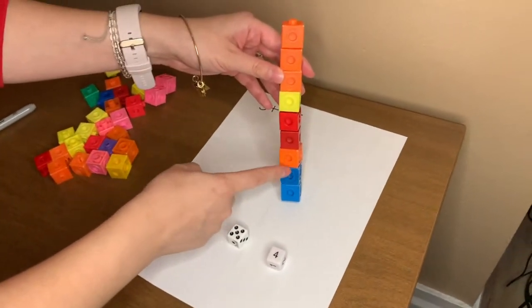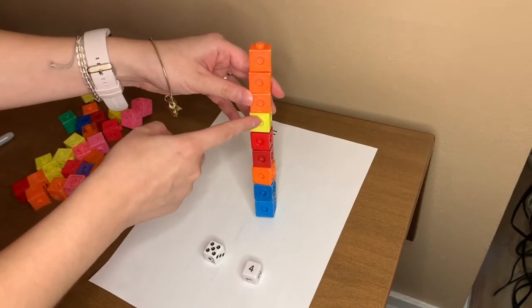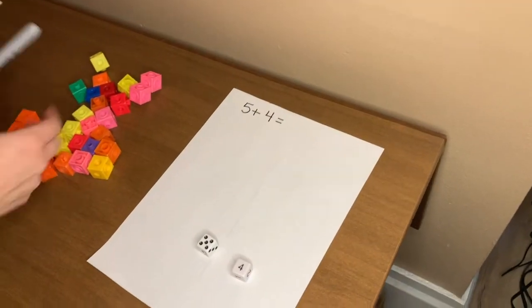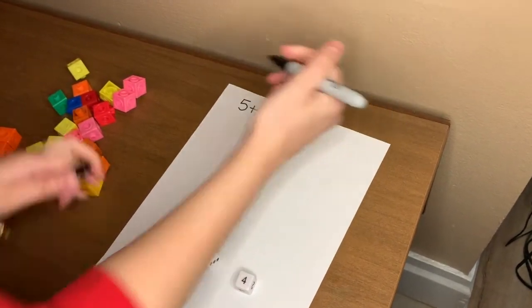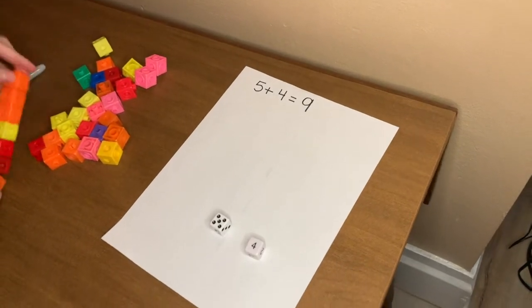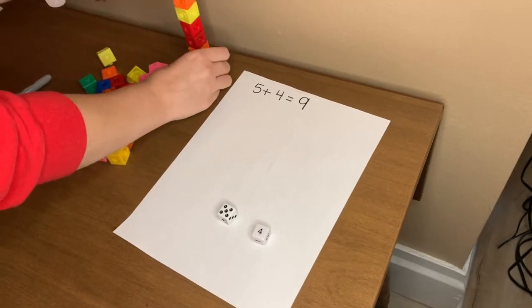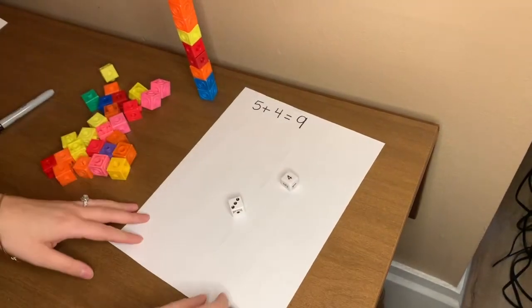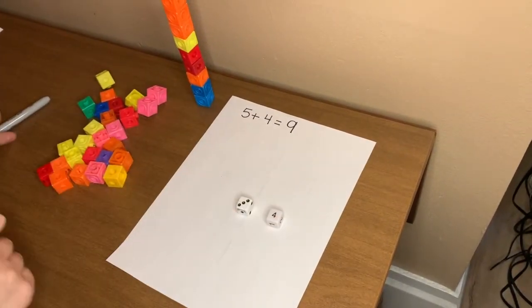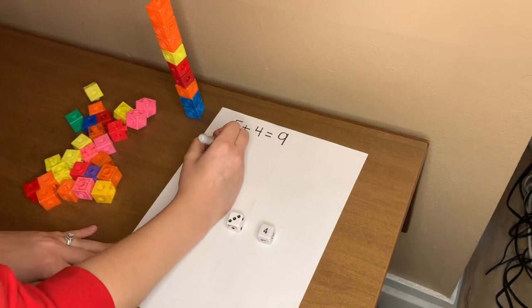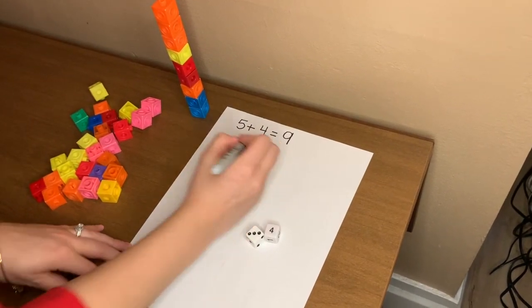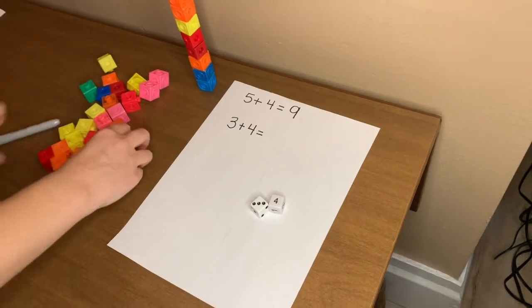Up. And then roll your dice again. Three and four. Write your equation: three plus four equals. Make your stacks: one, two, three. Three is my first stack. My second one, four: one, two, three, four.